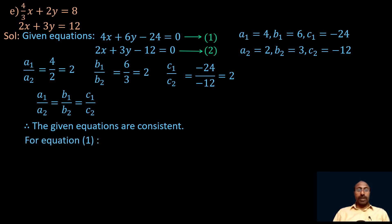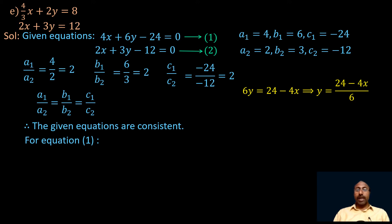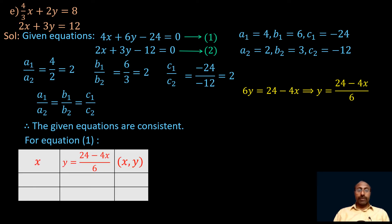For equation 1, let us write a table with values of x and y where the point (x, y) lies on the line represented by equation 1. The first equation is 4x plus 6y minus 24 equals 0. From that we can write 6y equals 24 minus 4x, which gives y equals (24 minus 4x) divided by 6. Let us draw the table for equation 1 with columns for x, y, and the point (x, y).